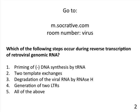The result of reverse transcription is a double-stranded copy of the viral RNA with two LTRs at either end. The next question asks which steps occur during reverse transcription — the answer is all of the above: priming of negative-strand DNA synthesis by tRNA, two template exchanges, degradation of RNA by RNase H, and generation of two LTRs.